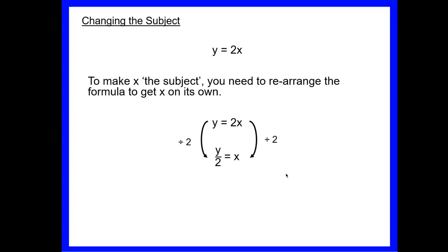Now we have made x the subject — x is by itself. Remember with formulae the thing we want always comes first, so once we've got the letter x on its own our final step is simply to swap both sides so that x is the subject: x equals something. So whenever you find the thing you want is on the right-hand side, just swap them over so you've got it on the left. We read left to right, so x is equal to y divided by 2, and now x is the subject.